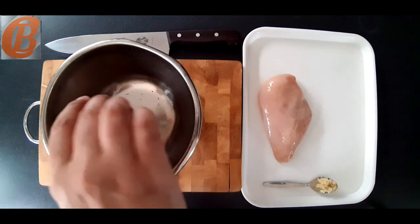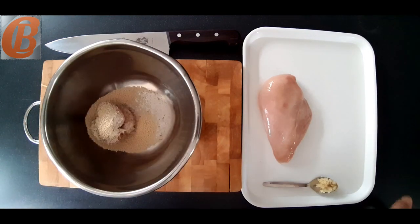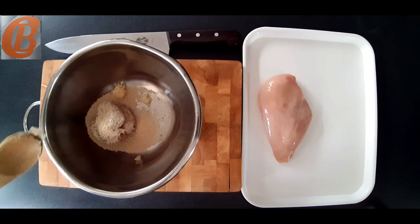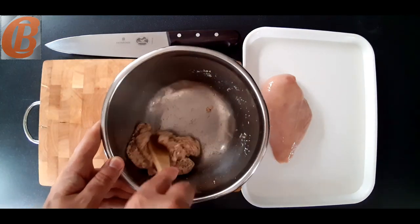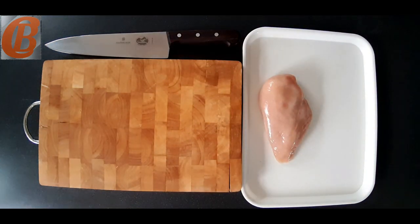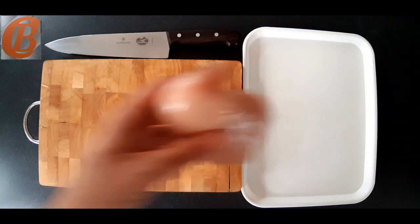And then we'll add our breadcrumbs and finally some finely diced garlic. And we'll just beat that together really well until it's all combined. And then just put that in the fridge and save that for later.